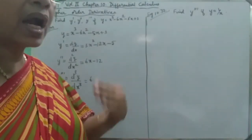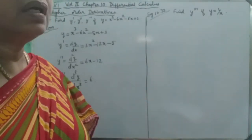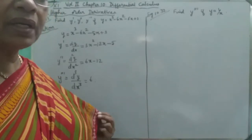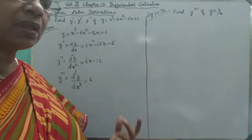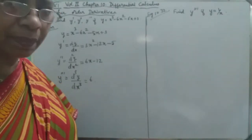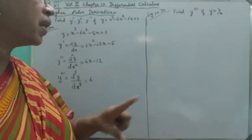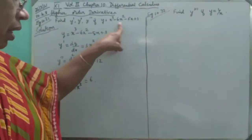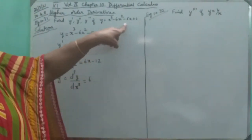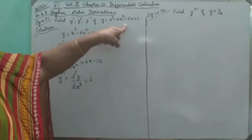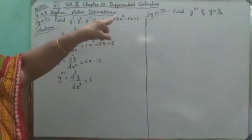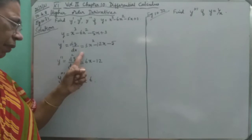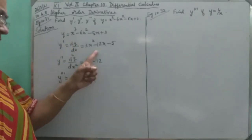Successive differentiation is a different way to differentiate. If y is a function, and you differentiate it, you get one function. When you differentiate that result again, you get another function. That is one function — right? When you differentiate, you get a new function each time.